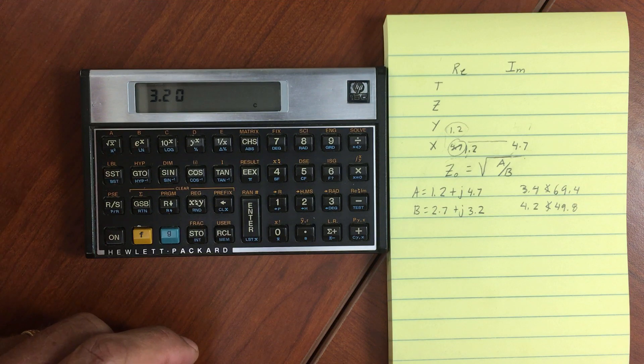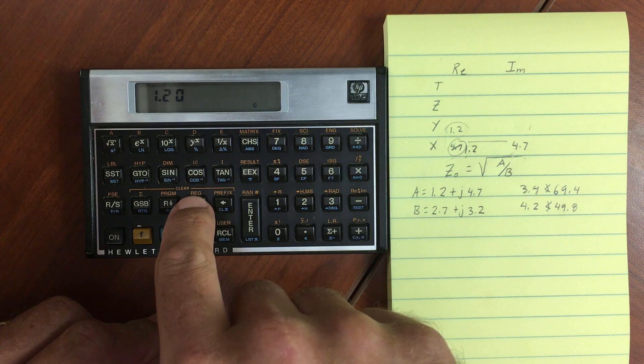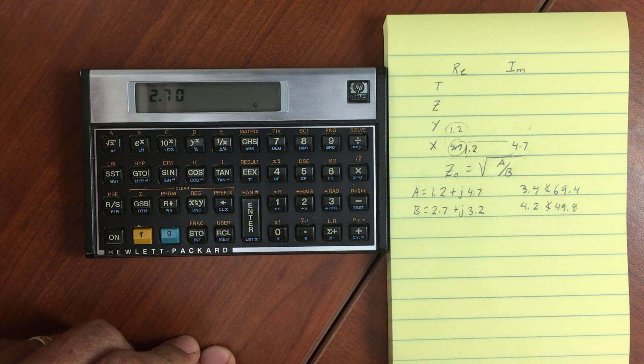Okay. So, 2.7, 1.2. We're good. So we got those two numbers.